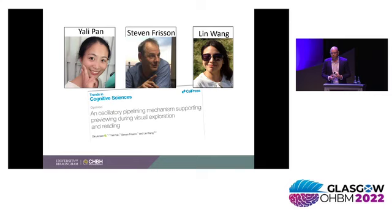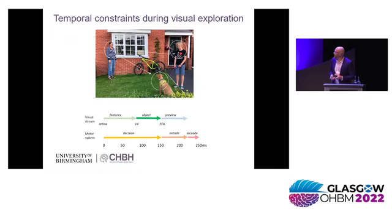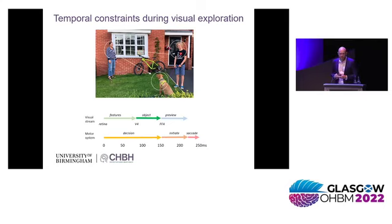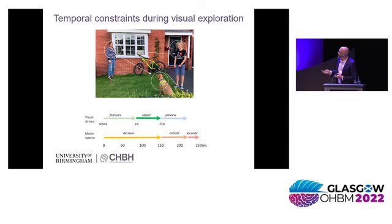What I'm going to do now is put forward a pipelining mechanism for how we think this processing might be going on. But before getting into that, I will tell you some more data about the temporal constraints during visual processing. Consider this picture — your eyes might move first from the boy, then to the woman, then to the dog. Now consider that we are fixating on the woman. This object is being processed in the ventral stream. At around 80 milliseconds, feature processing is going on in V4. Slightly later, at maybe 150 milliseconds, the object is being identified in object-selective cortex. Then there's a bit of time left for previewing and deciding where to move the eyes next.